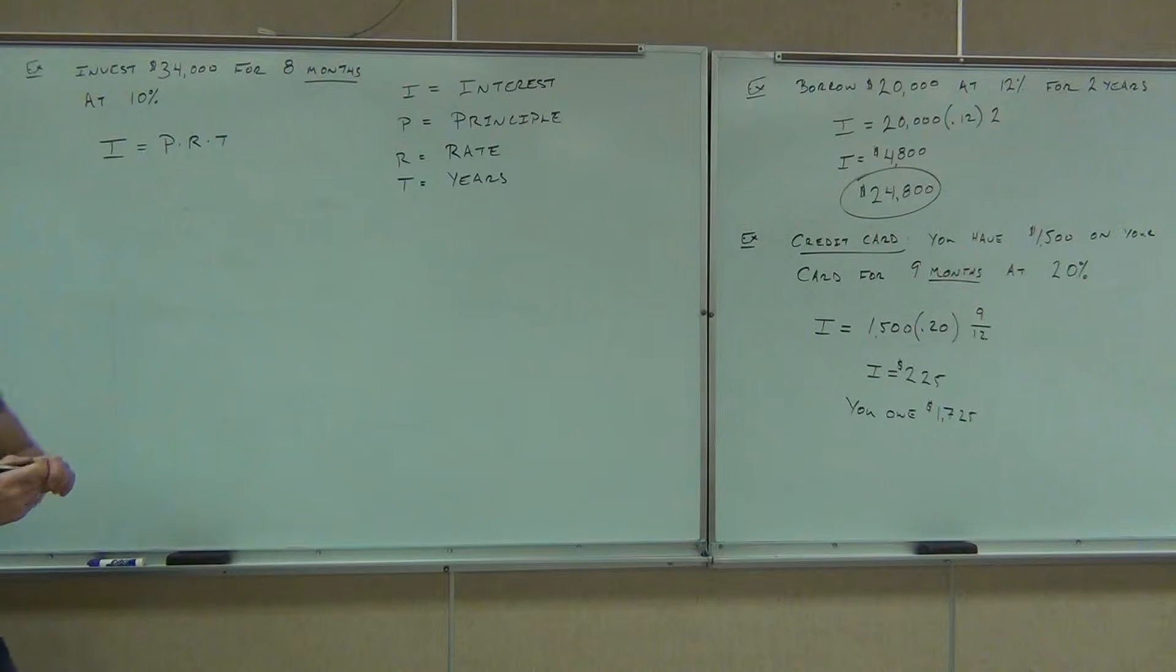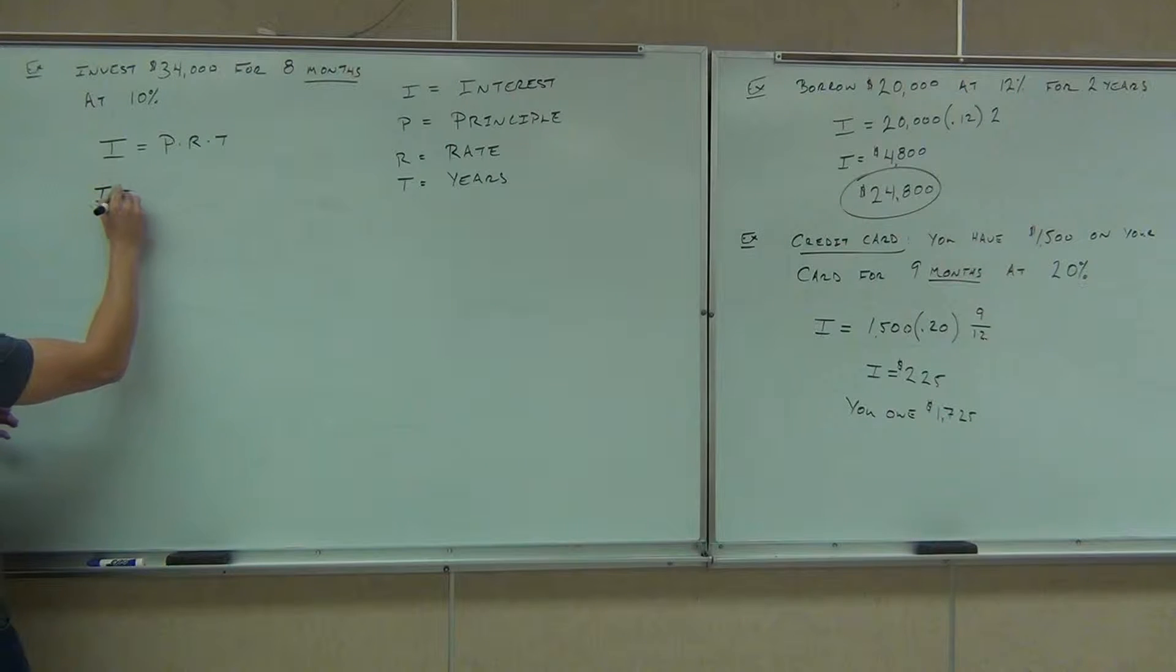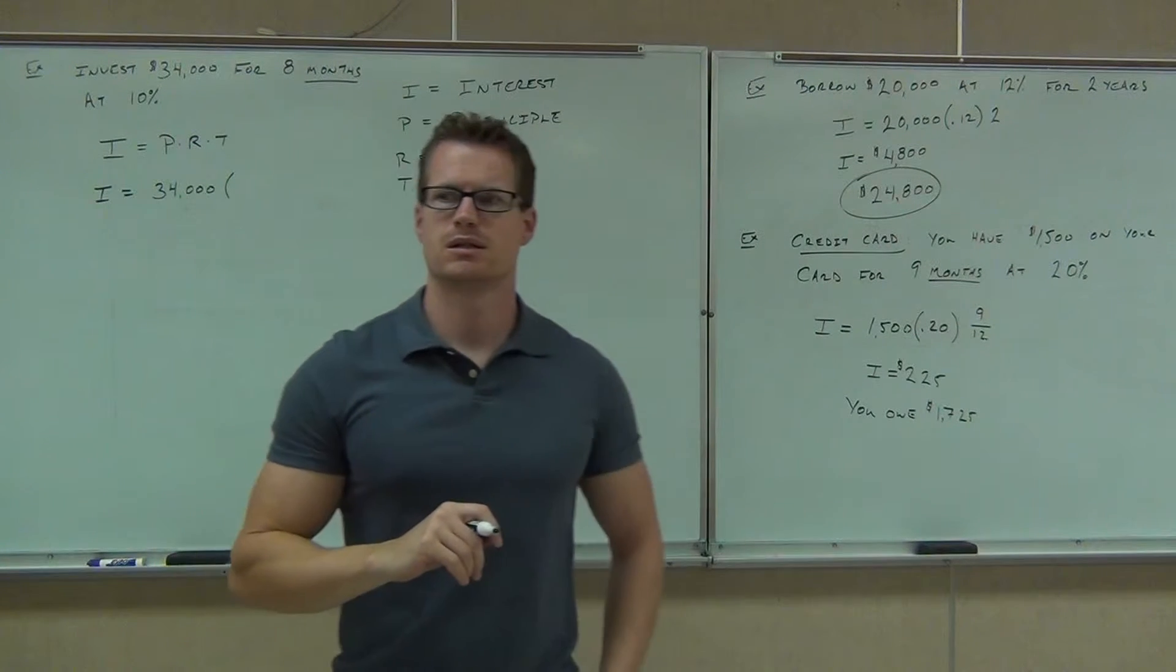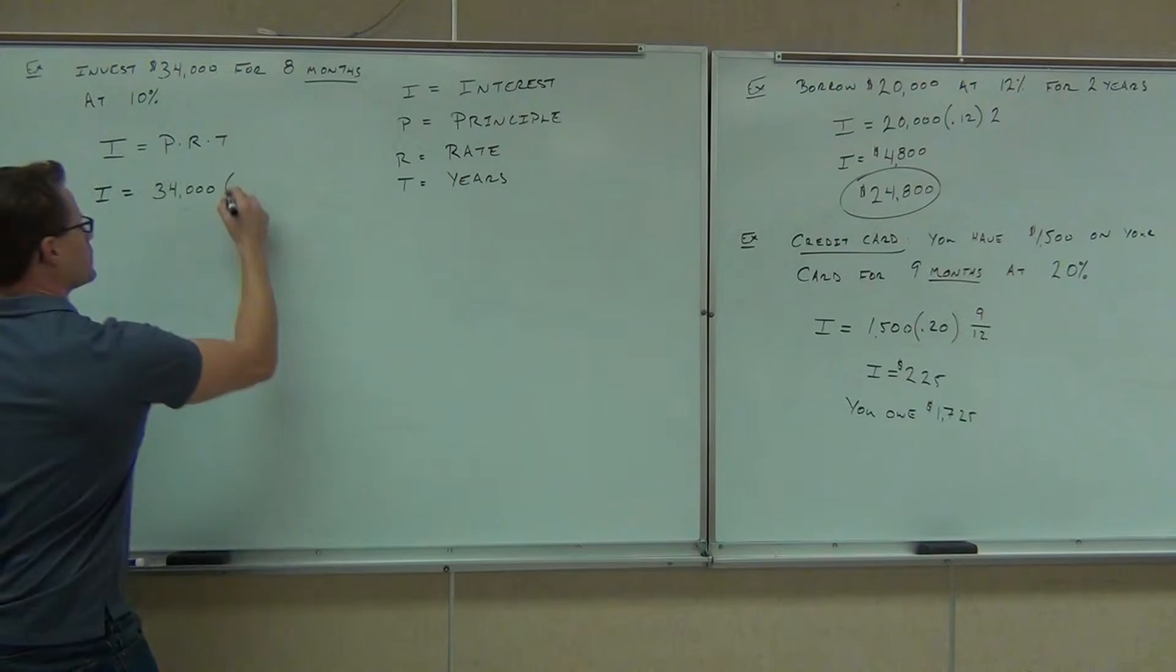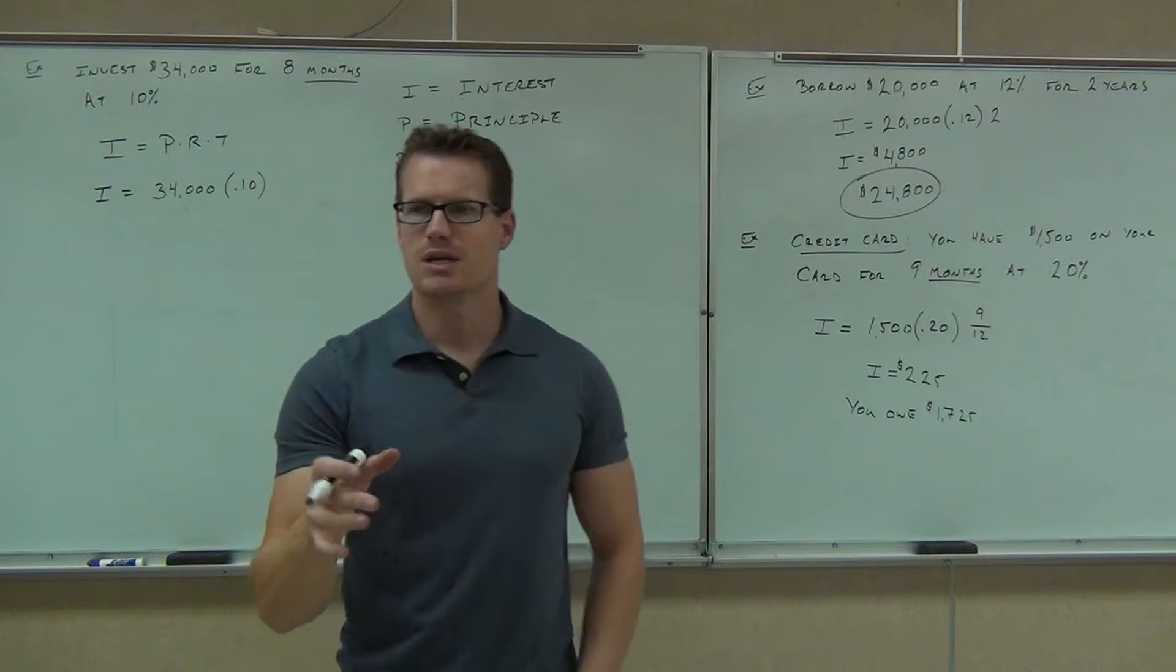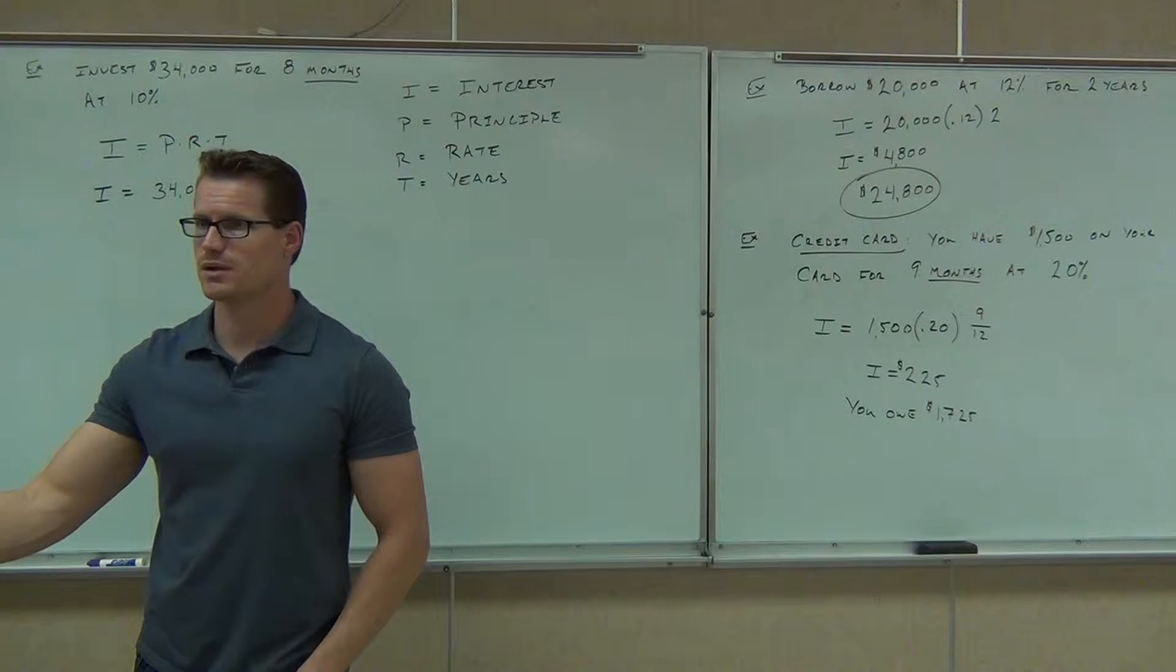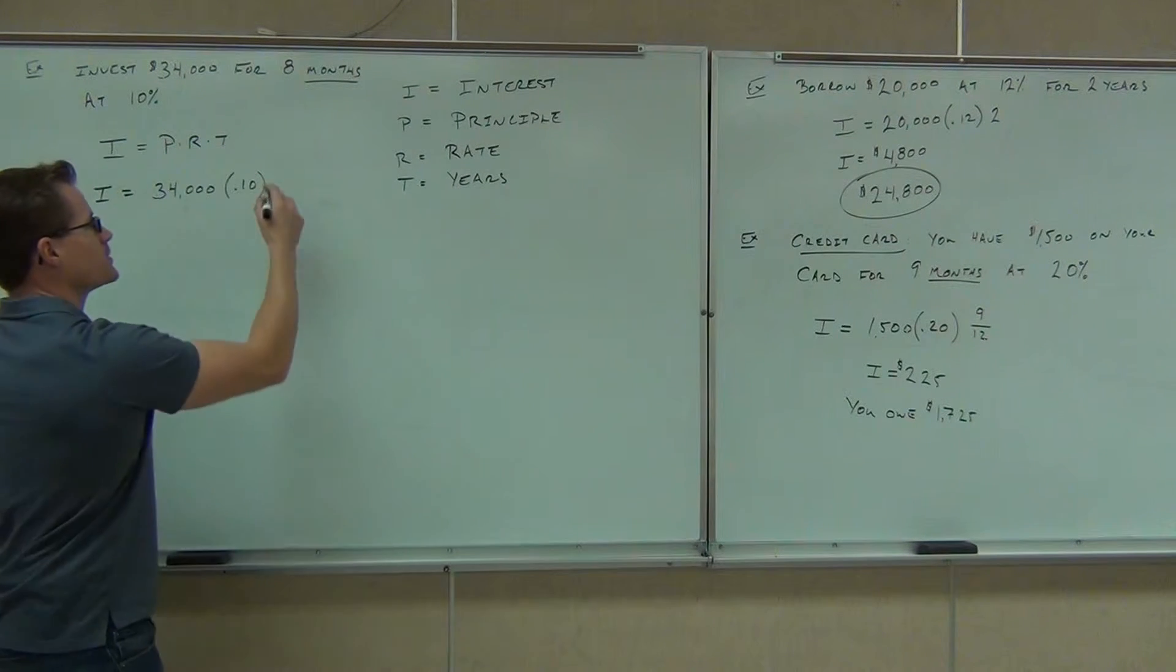Okay, ladies and gentlemen, what is your principal in this particular case? $34,000. What is your interest rate? 10%. So you're going to put what down on your paper? Now, your time, you can't put the eight. You've got to do 8 over 12 because you're talking about months. So you're talking about really eight-twelfths of a month, or two-thirds, 0.666. Right? But don't round that. If you round it, you might be off by pennies.